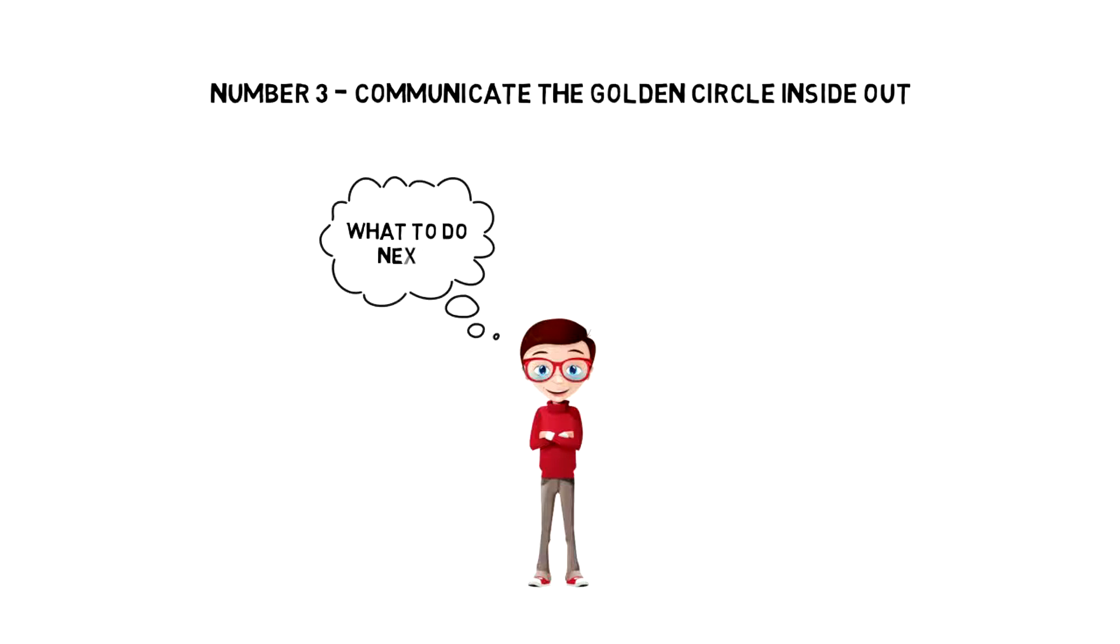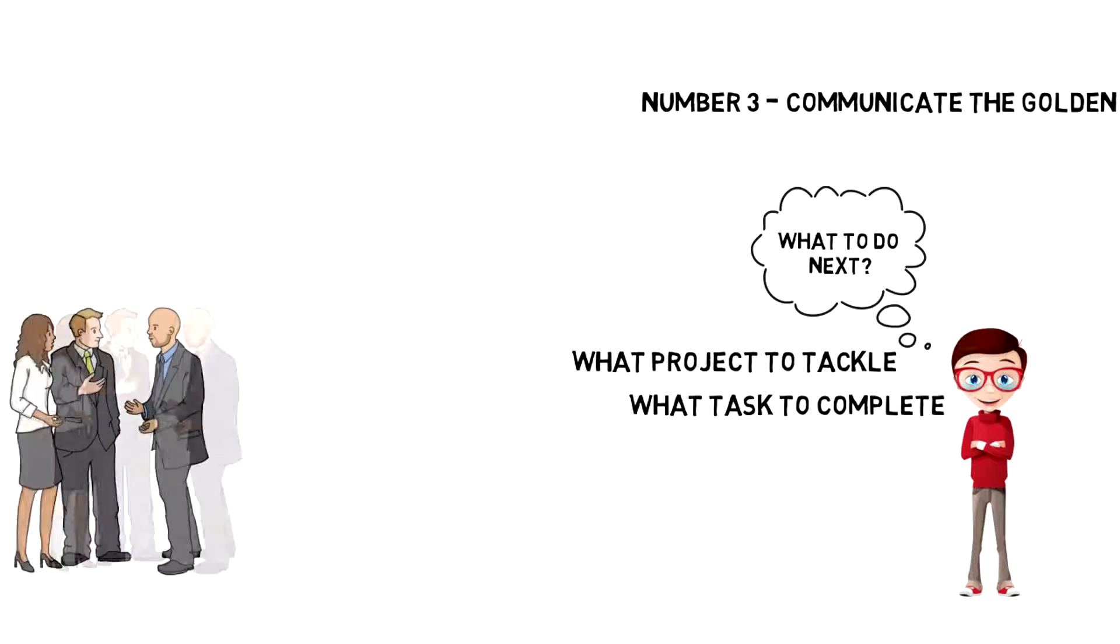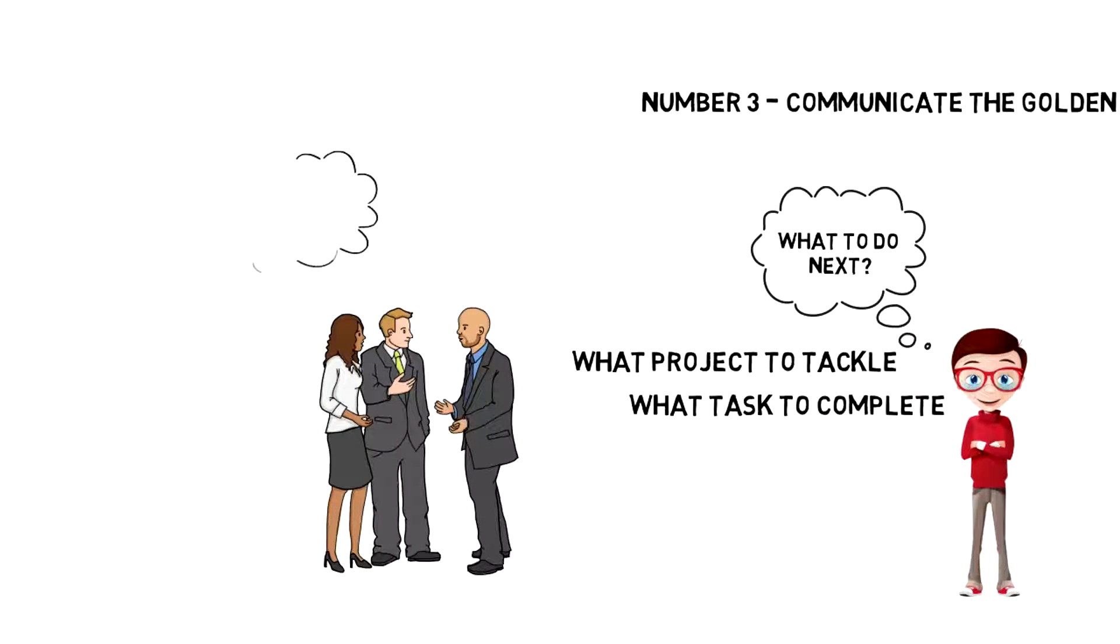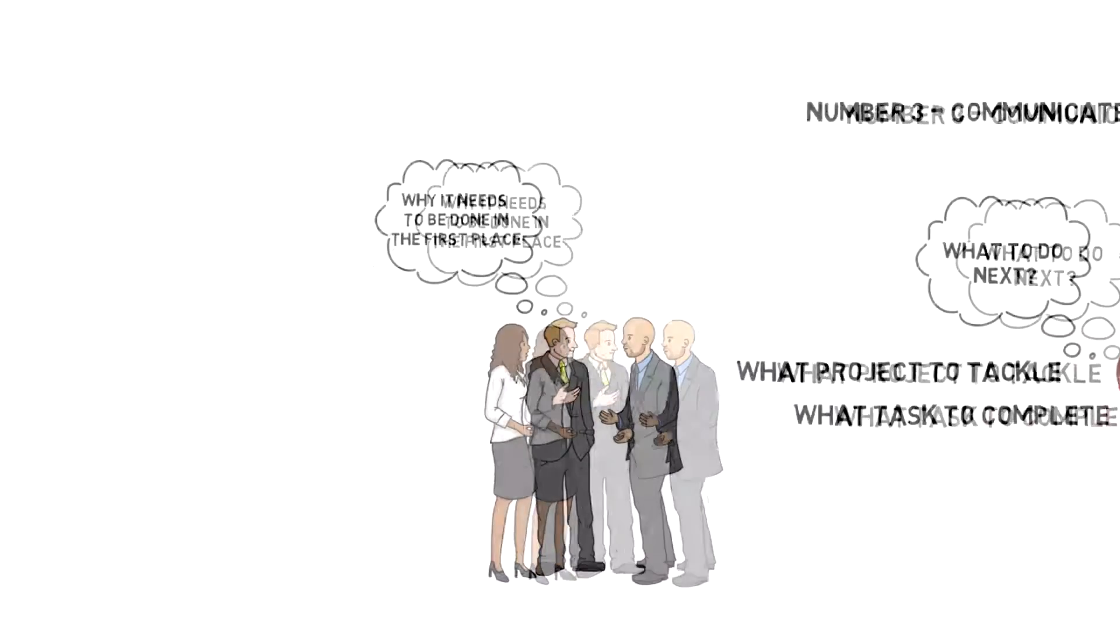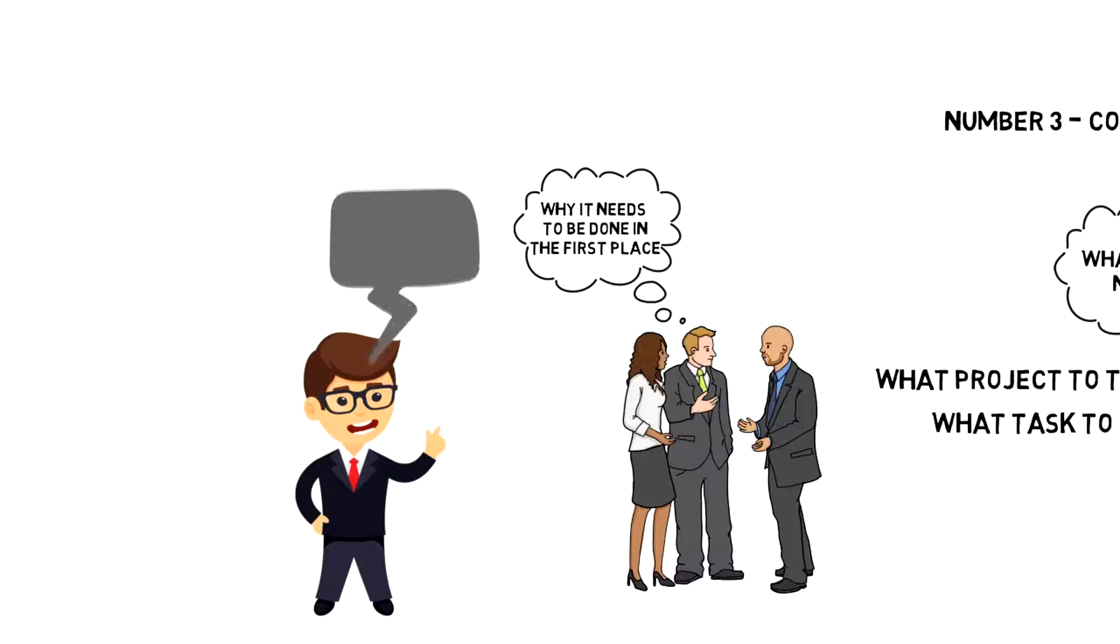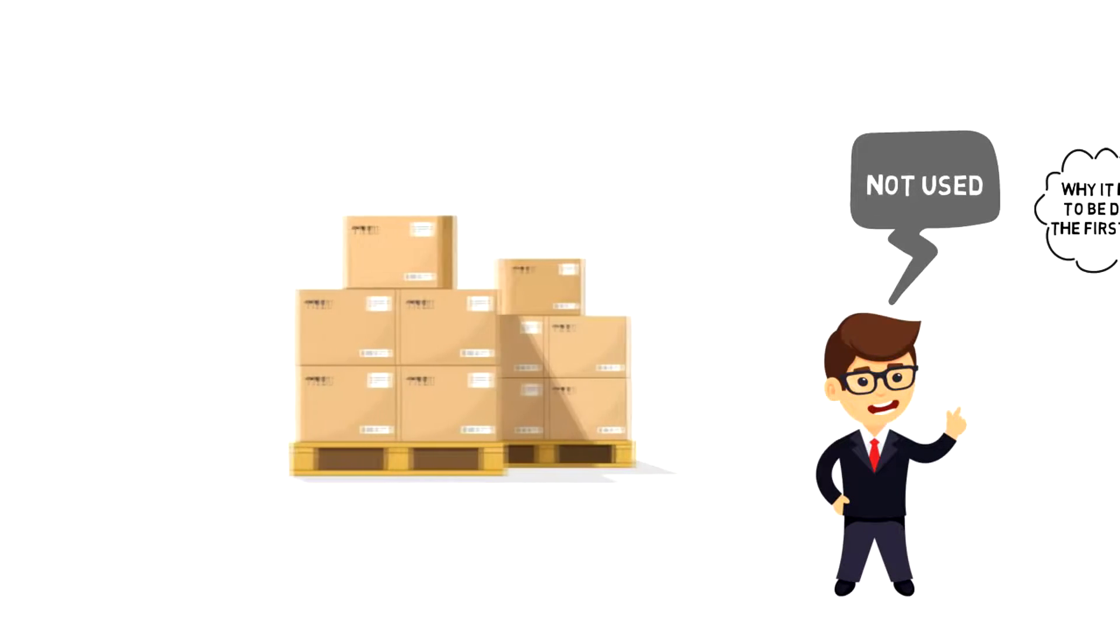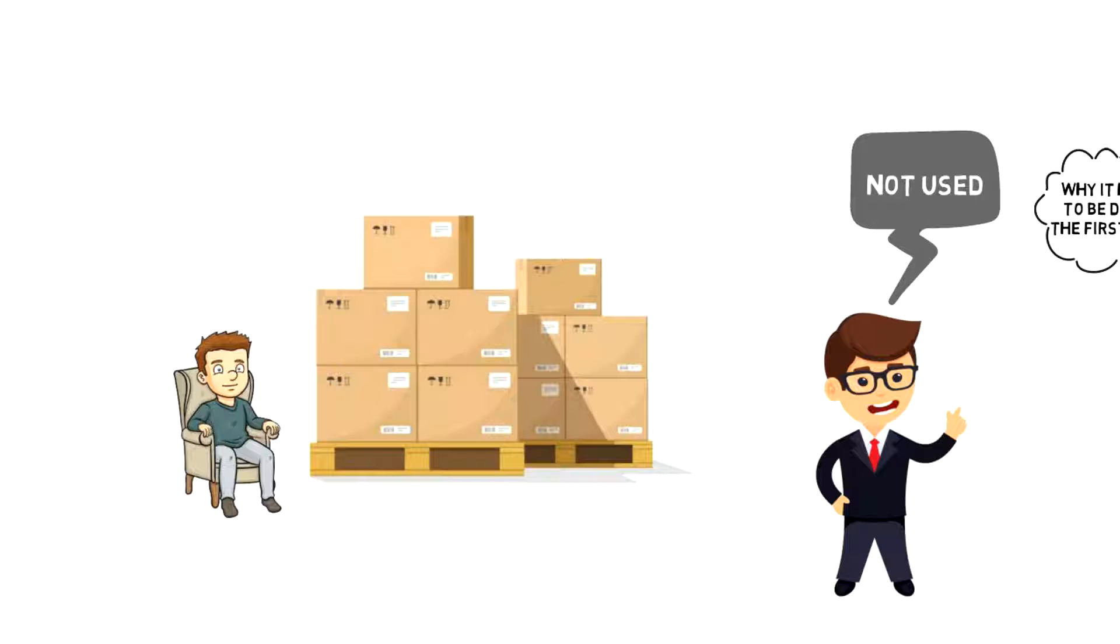Number three. Communicate the Golden Circle inside out. Everyone is always quick when it comes to deciding what to do next, what projects to tackle or what tasks to complete. And some people will also tell you how to get it done. But very few people will know why it needs to be done in the first place. This results in many things being created but not used. Companies just produce a lot of stuff that later just sits in the warehouse.